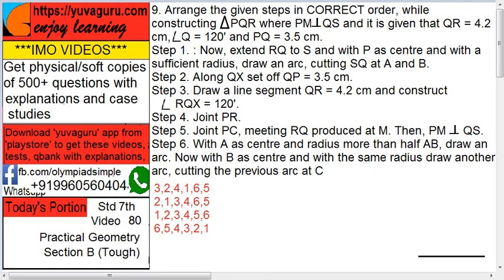Correct sequence: first construct PQR. For constructing PQR, QR is the base so you have to construct base first. Where is the base? Step 3: draw line segment QR 4.2 cm and construct angle RQX. X is an imaginary. 120. Now this is the first step.